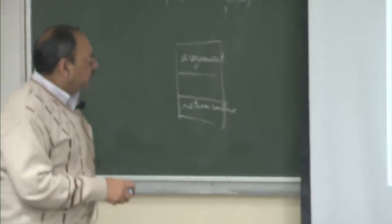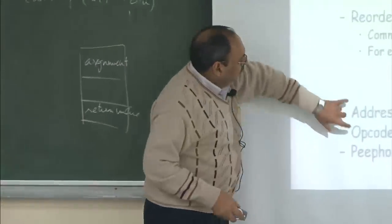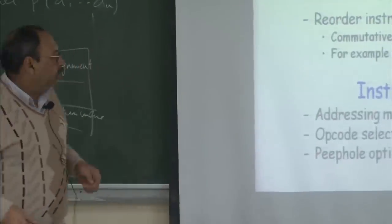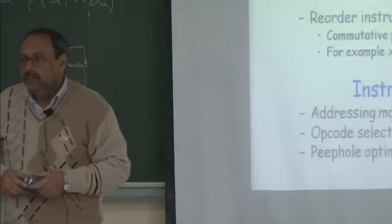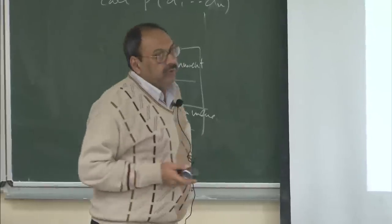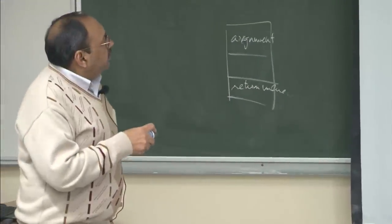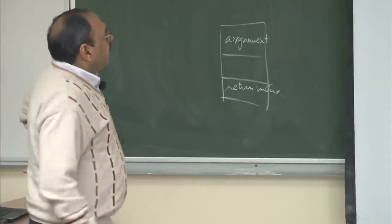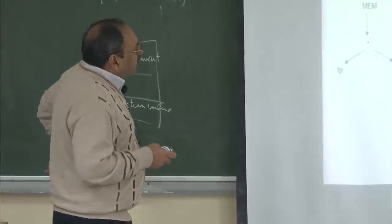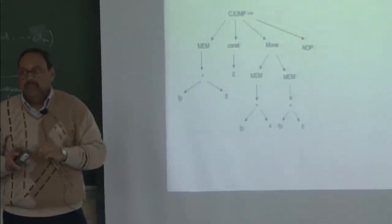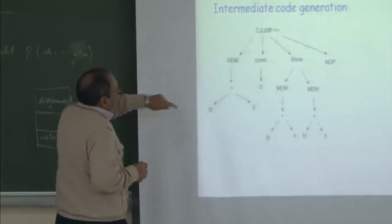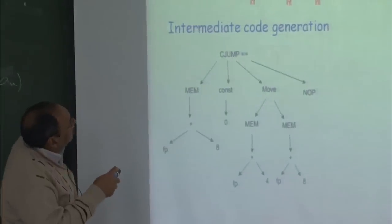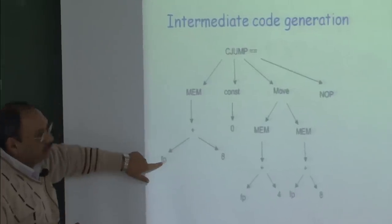Then I will start actually using instruction selection. Once I have done the intermediate code generation, I will look at the complete syntax of the machine and try to find out how to use the machine syntax for finding out addressing mode, opcode, and peephole optimization. This is where we work at the end of the front end. This is the disambiguated abstract syntax tree we had at the end of the front end, and now when I try to do intermediate code generation, it generates code which is not tied to a particular machine but is close to many machines.